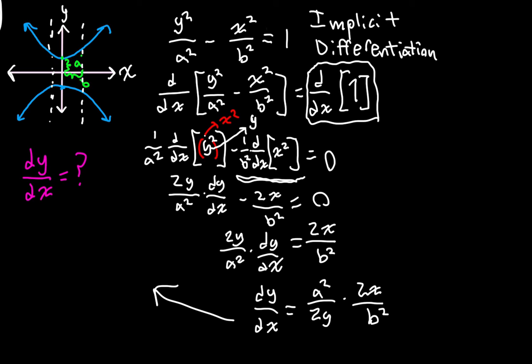So our final answer is going to be that the derivative of y with respect to x is equal to, these twos cancel out, we have a²x over b²y. Almost identical to the formula that we found in the last video, but a couple things are switched around. I hope you enjoyed this series of quick videos, and thanks for watching. Goodbye.